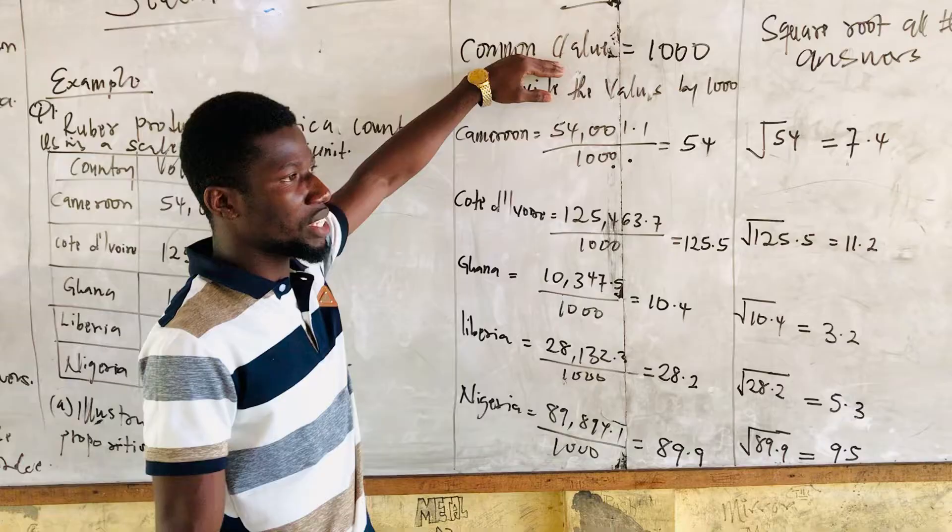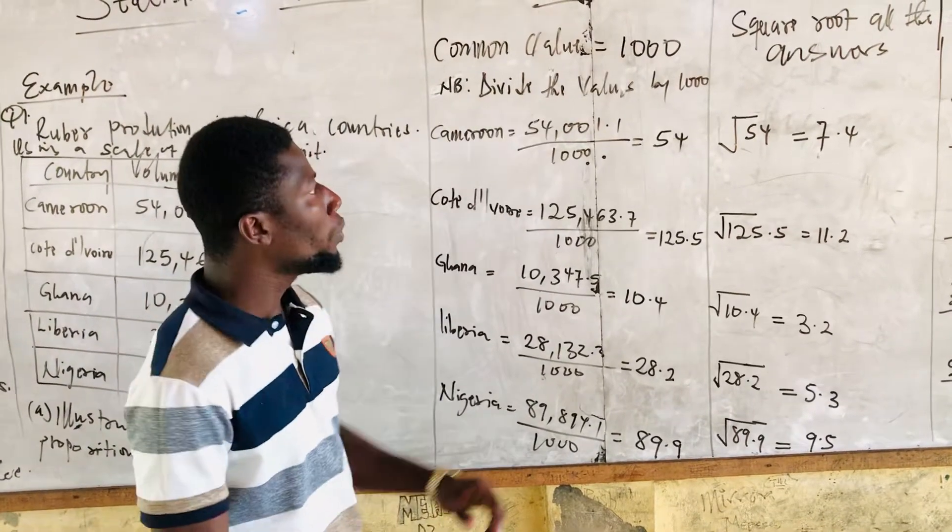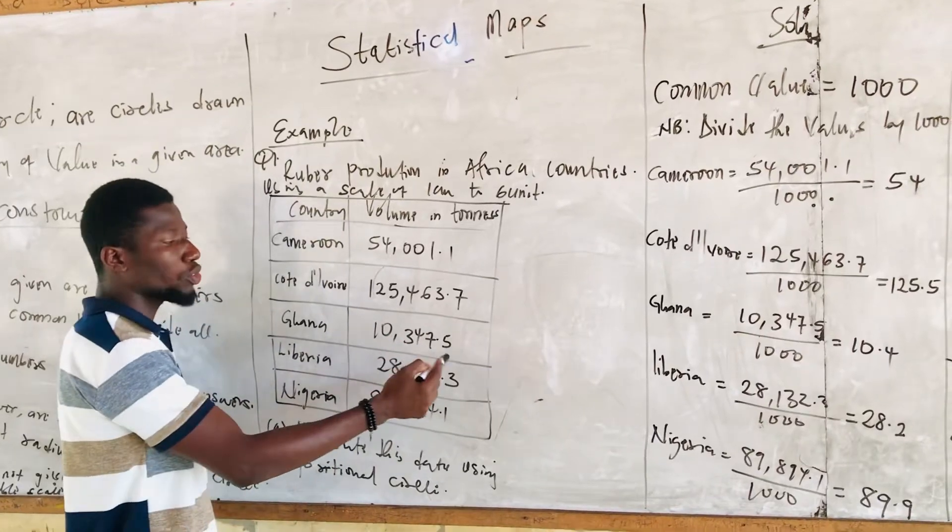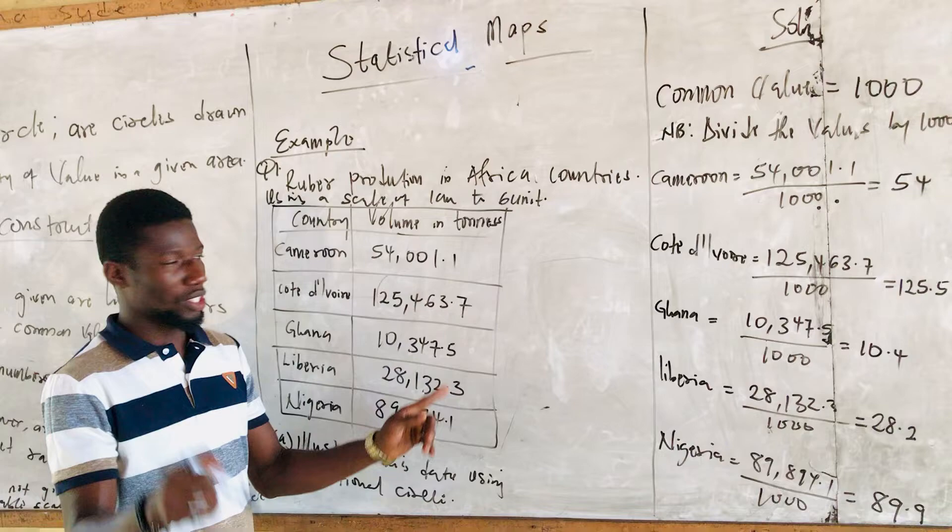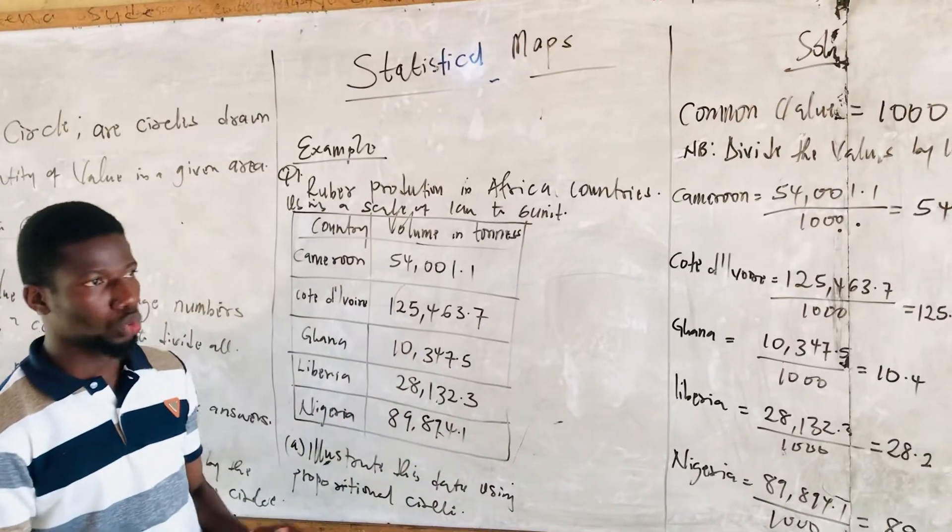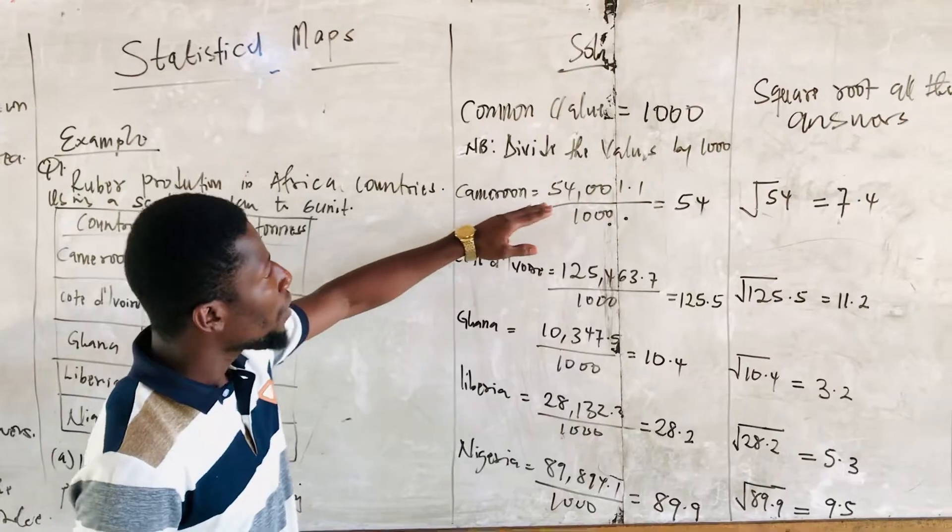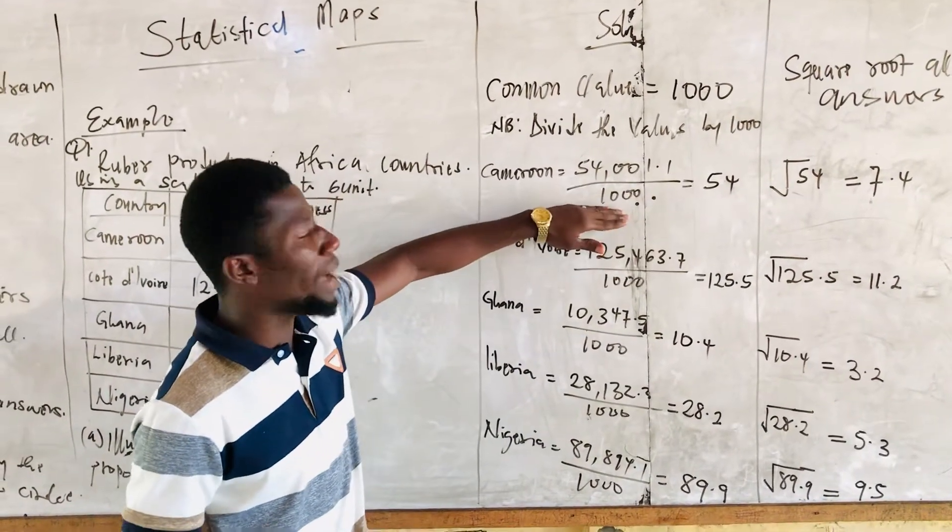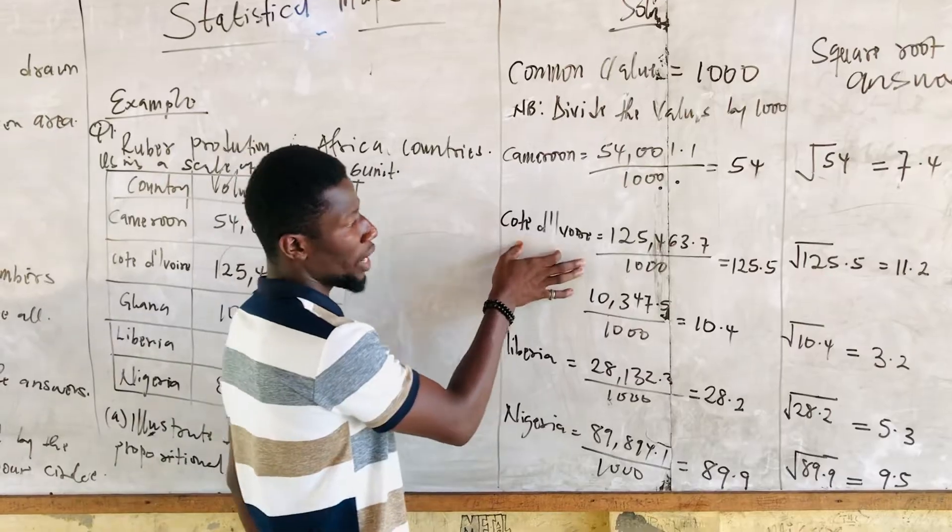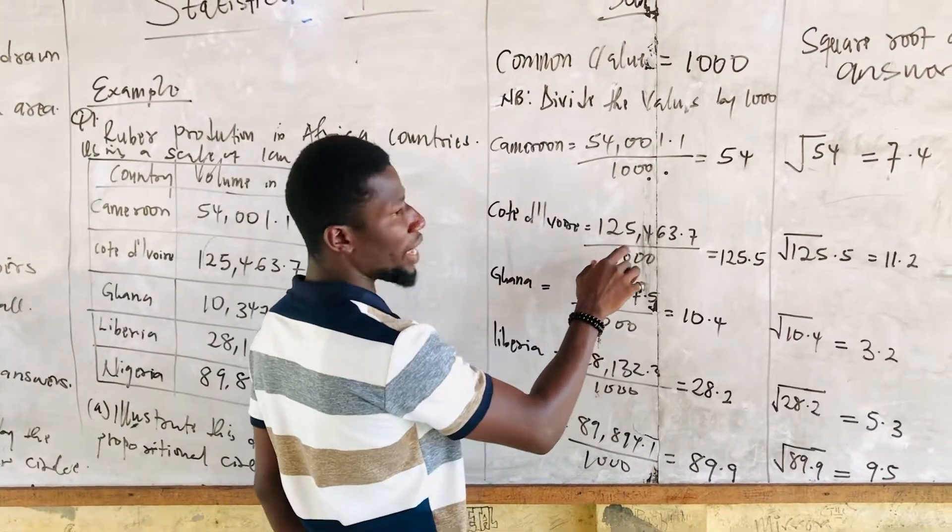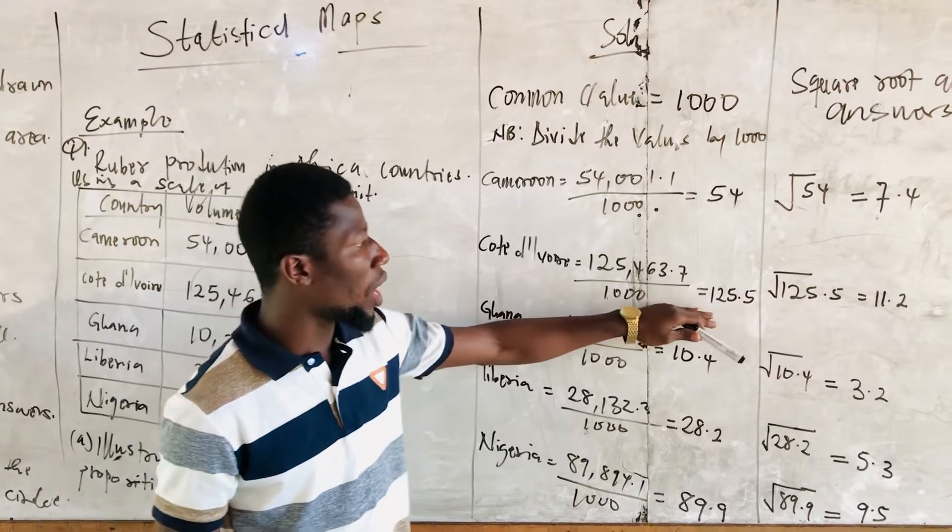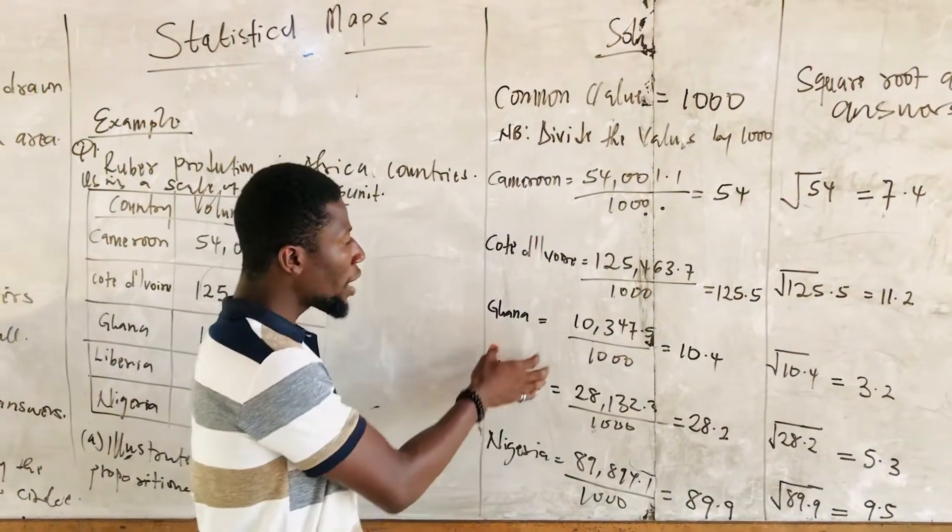Our common value we choose here is 1,000. We choose 1,000 because looking at the smallest value is 10,000. So we go to Cameroon: 54,001.1 divided by 1,000, the result is 54. Let's go to Côte d'Ivoire: 125,463.7 divided by 1,000, the result is 125.5.